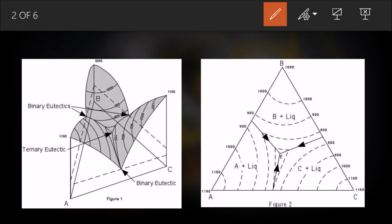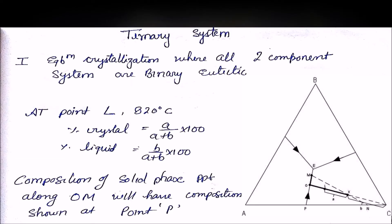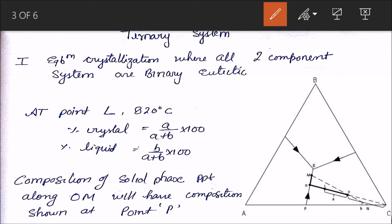Now we will move on and understand how crystallization actually takes place. We will deal with equilibrium crystallization where all two-component systems are binary eutectic. So the two-component pairs are A-B, B-C, and A-C — all three are binary eutectic.